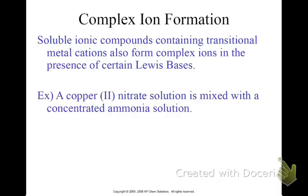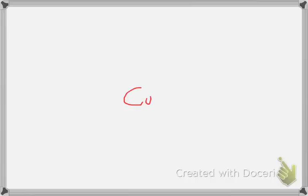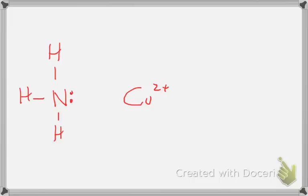Here's a practice problem. A copper 2 nitrate solution is mixed with a concentrated ammonia solution. If you're on the AP test and you see the word concentrated, you should immediately think: this must be a complex ion problem. So copper 2 is Cu2+, and ammonia is NH3, which has those lone pairs. Ammonia acts as a Lewis base, so we can take those electrons and donate them to the copper.